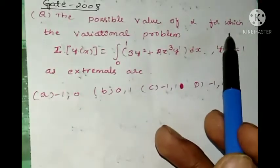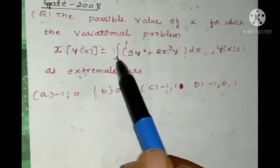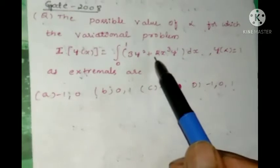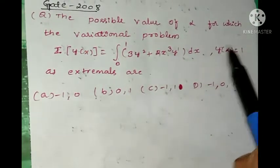The possible value of alpha for which the variational problem I[y(x)] = ∫₀¹ (3y² + 2x³y') dx, y(α) = 1 as extremals are the given four options. Now we have to find the value of alpha.